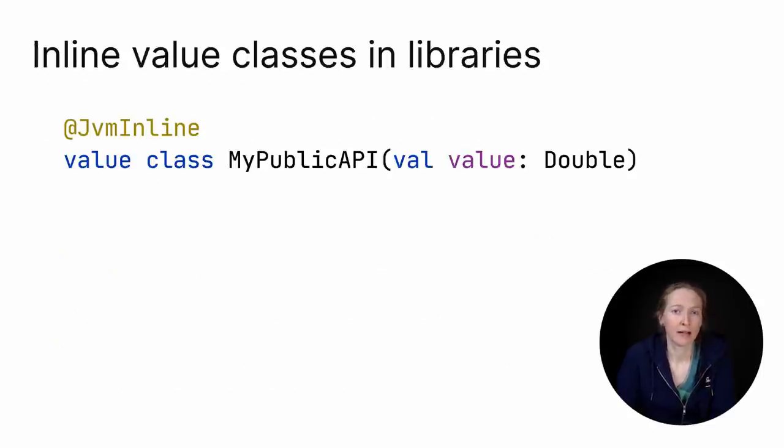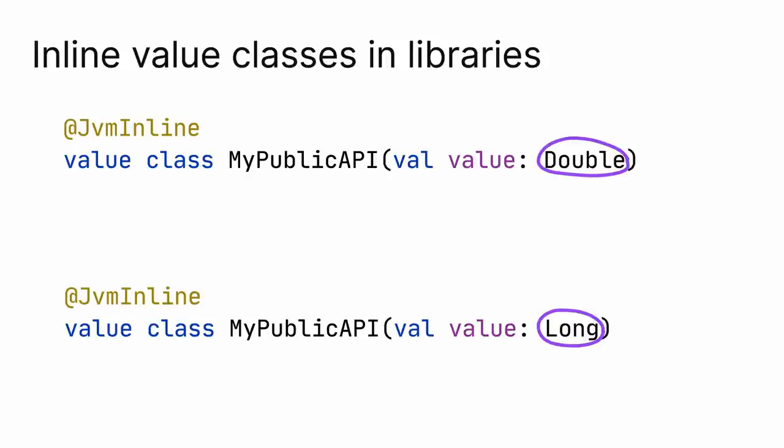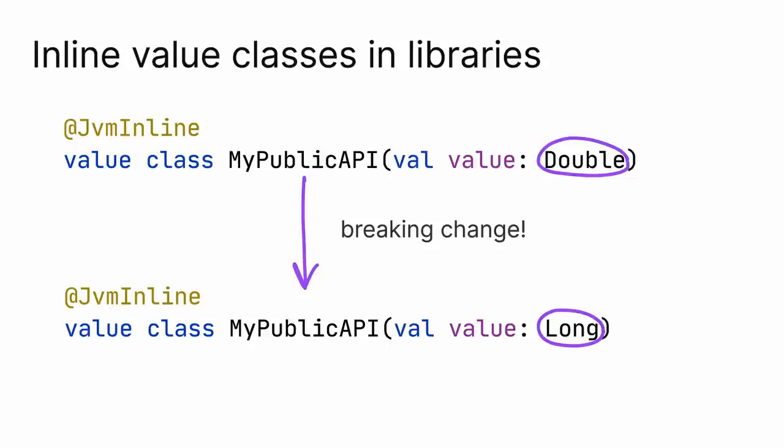I want to point out one peculiarity of defining inline classes in the library. Imagine you are a library author and you define an inline class as a part of the public API. If you want to later change the type of the underlying value, it's a breaking change. Since any function using this inline class is compiled to the one using the underlying type, that breaks.